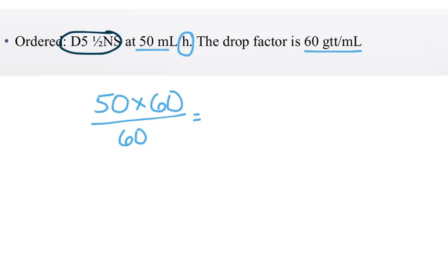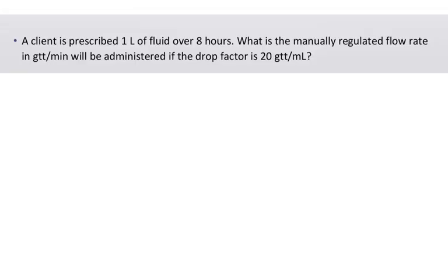Then you do 50 times 60, divided by 60, and you would get 50 GTTs per minute.